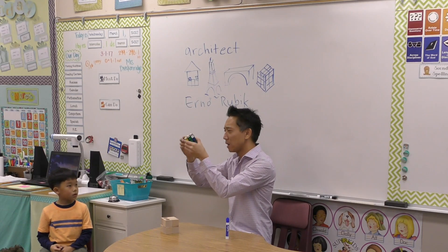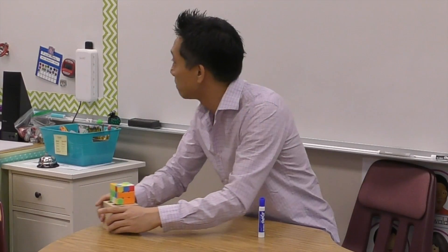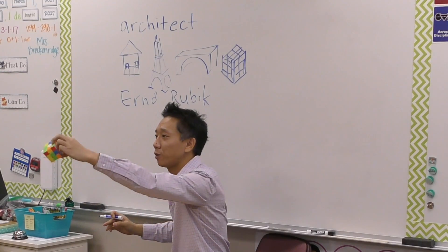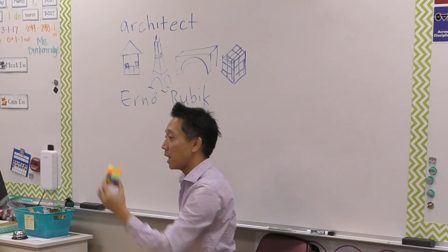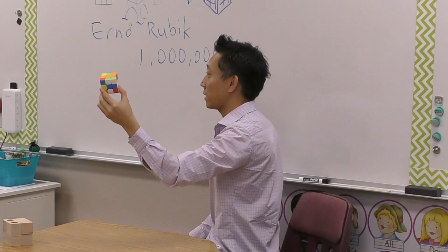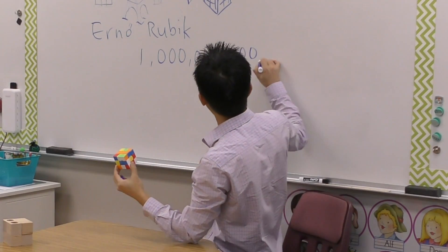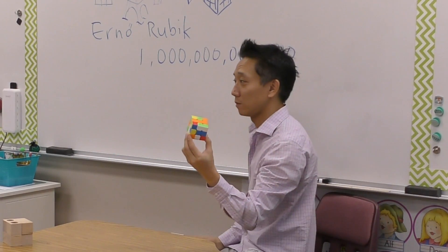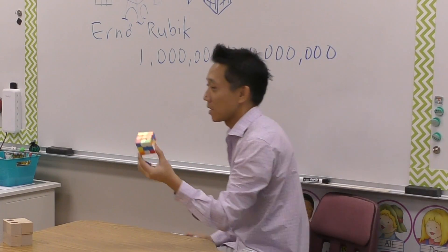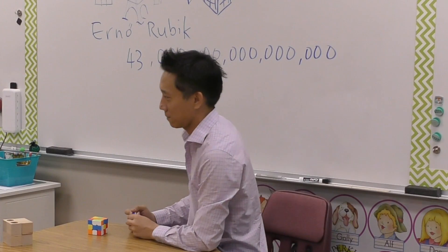He had made this thing which is almost impossible to solve. Do you know how many different combinations it has? It's more than one million... more than one trillion... more than one quadrillion. The Rubik's Cube can be mixed up in more than 43 quintillion ways!